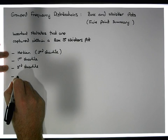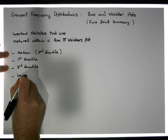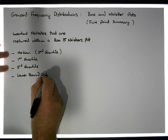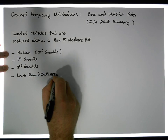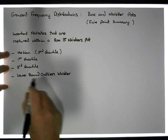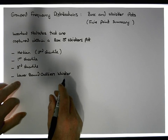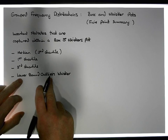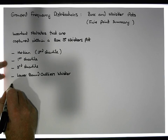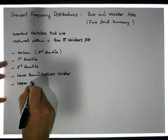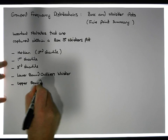So we have the median, the first quartile, the third quartile, and then a lower bound demarcation point — let's call this the lower bound outlier whisker. This is a point along the scale where any values less than it are classified as lower bound outliers. And then we have an upper bound outlier whisker.